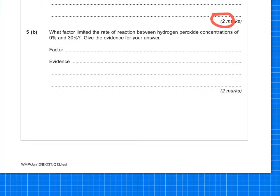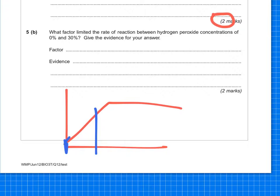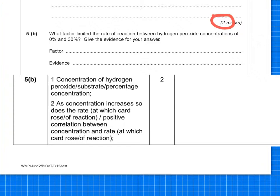So what factor limited the rate of reaction between hydrogen peroxide concentrations of 0 to 30%? It says, give the evidence for your answer. So when you look at the graph from 0 to 30, what's limiting it is, if we think that's the substrate concentration on the x-axis, it is the substrate concentration. So in this case, that's hydrogen peroxide concentration. And the evidence is that as the concentration increases, so does the rate at which the card rose. You can say it's positive correlation between the concentration and rate as well.